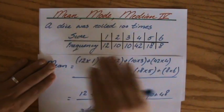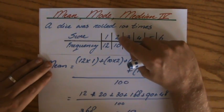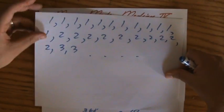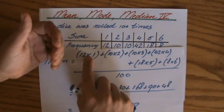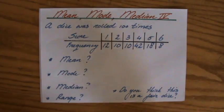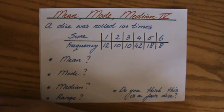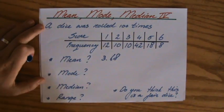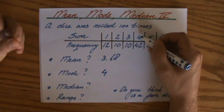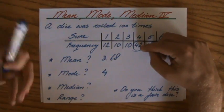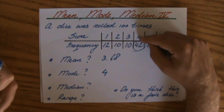That makes sense — it's between 1 and 6, and most values are around 4, so 3.68 is a beautiful answer. The key point with a frequency table is: 12 ones, 10 twos, 10 threes, 42 fours, 18 fives, 8 sixes — it's 12 times 1 plus 10 times 2 plus 10 times 3, and so on. Now, what about the mode? The mode is 4, because 4 is the most popular — it occurs 42 times. Do not say the mode is 42; 42 is the frequency. The mode, the score, is 4.